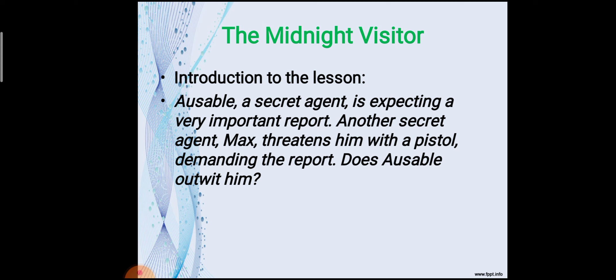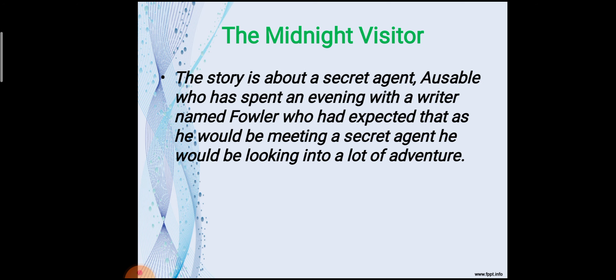In the story there is one character named Ausable. He was a secret agent and is expecting a very important report. Another secret agent, Max, threatens him with a pistol demanding the report. Does Ausable outwit him? That is the question. The story is about secret agent Ausable, who has spent an evening with a writer named Fowler.